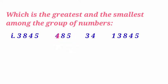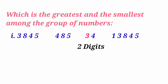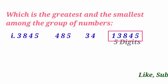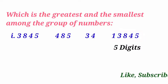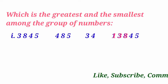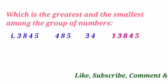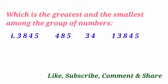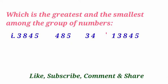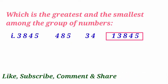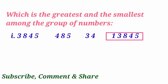The second number has digits four, eight, and five. The third number has only two digits: three and four. And the fourth number has five digits: one, three, eight, four, and five. Among all these numbers, the fourth number has more digits than the others.